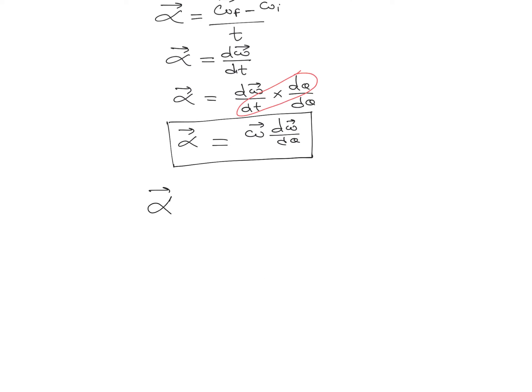As angular acceleration is the rate of change of angular velocity, we can write its unit. The unit for angular velocity was radians per second, divided by second, so the unit for angular acceleration is radians per second square. Angular acceleration is a vector quantity and its direction is along the direction of change in angular velocity.